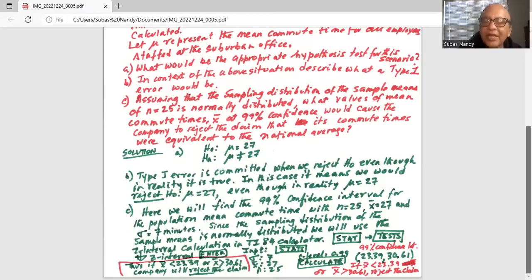Bring the cursor and calculate and hit enter. So the 99 percent confidence interval, the lower boundary is 23.39 upper boundary is 30.61. If x bar is less than 23.39 or x bar is greater than 30.61 then we will reject the null hypothesis.